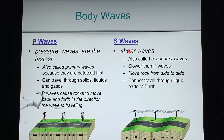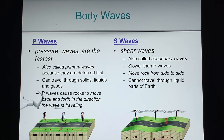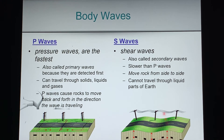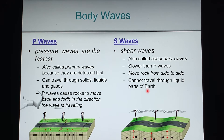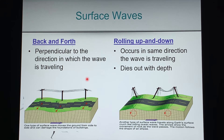Then we have S waves, also called shear waves or secondary waves. They come after the P waves. S waves move the rock up and down. So now you've got back-and-forth from P waves and up-and-down from S waves, doubling the damage as they travel through. However, S waves can't travel through the liquid parts of the interior of the earth.